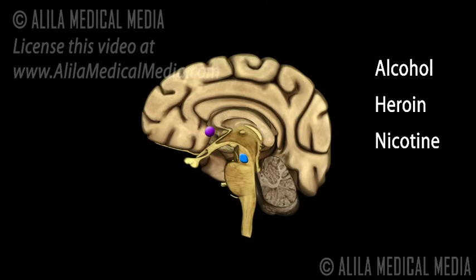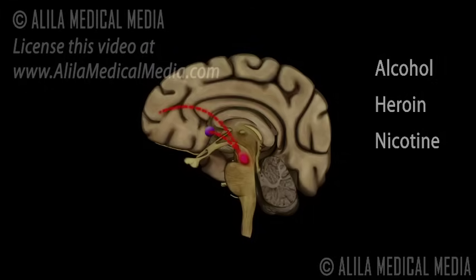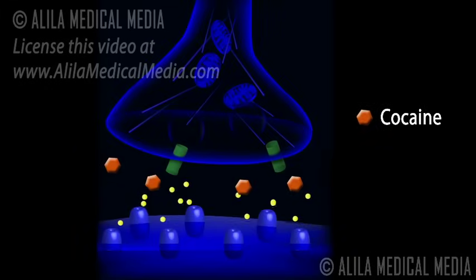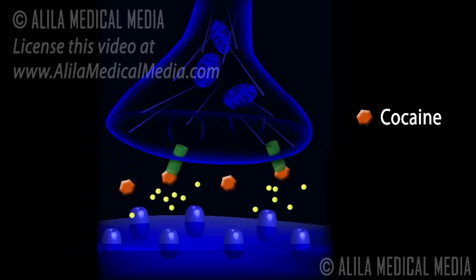Some drugs such as alcohol, heroin, and nicotine indirectly excite the dopamine-producing neurons in the VTA so that they generate more action potentials. Cocaine acts at the nerve terminal. It binds to dopamine transporter and blocks the reuptake of dopamine.